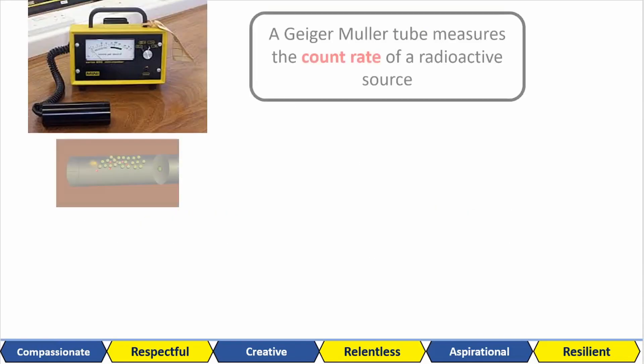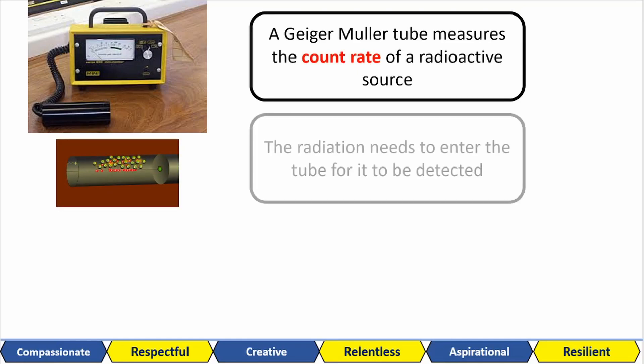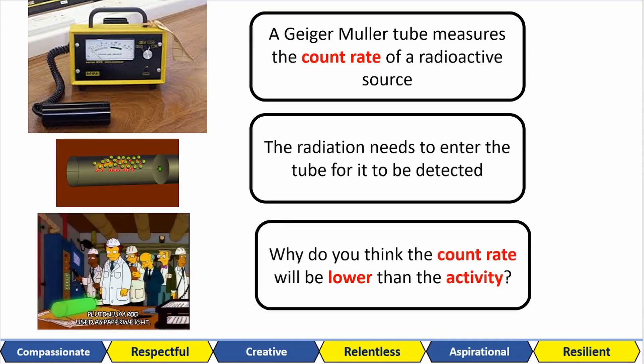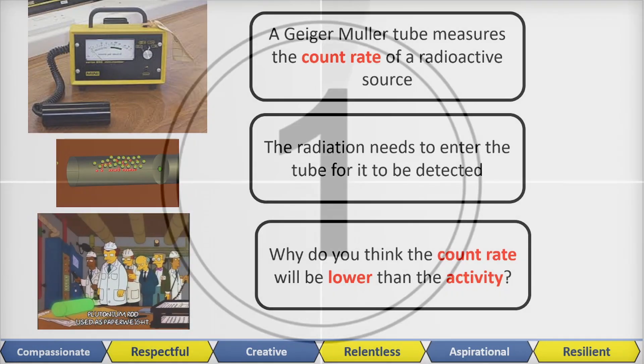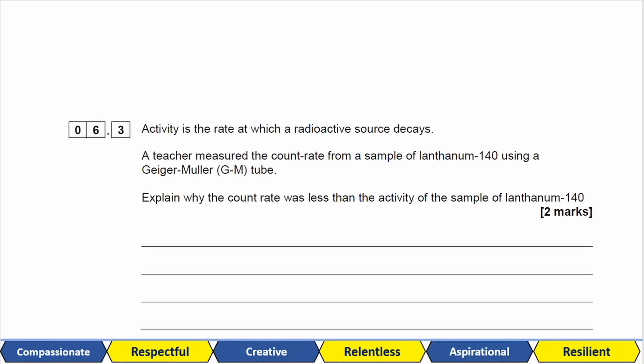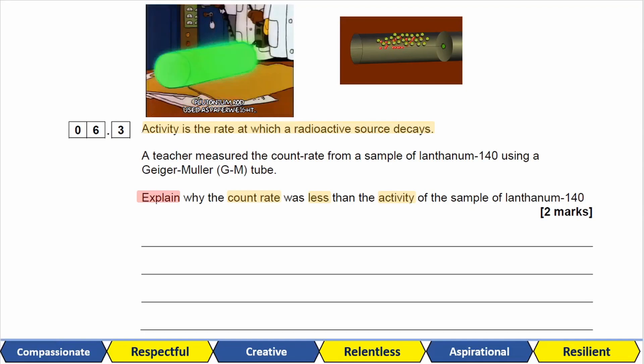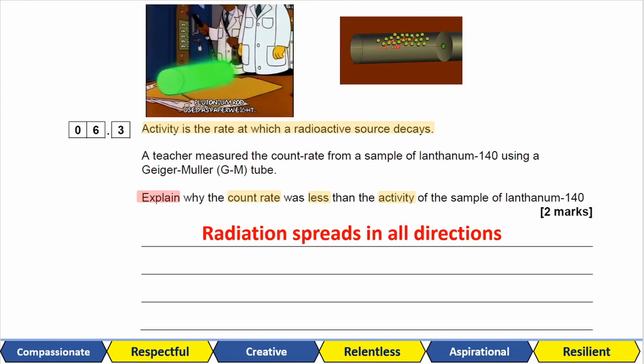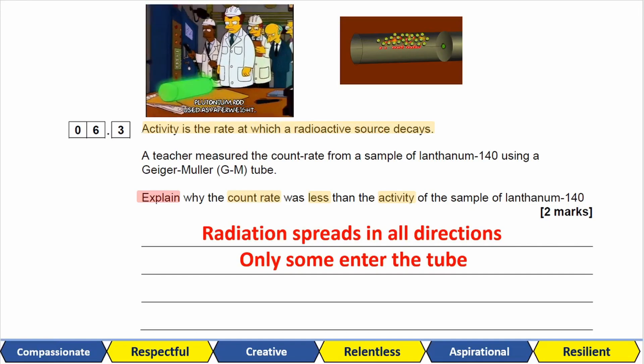We can detect radioactive sources using a Geiger-Miller tube. This measures something called the count rate. And for this to happen, the radiation must enter the tube for it to be detected. Think carefully now. Why is the count rate almost always lower than the activity? The activity is the rate at which a radioactive substance decays. A teacher measured the count rate from a sample of lanthanum 140 using a Geiger-Miller tube. Explain why the count rate was less than the activity of the sample. The first mark comes from saying that the radiation will be spread in all directions. It's not just moving in one direction. And therefore, only a small amount of that radiation is going to enter the Geiger-Miller tube.